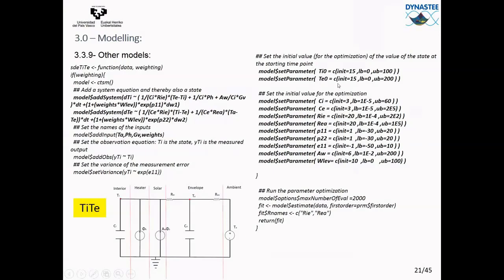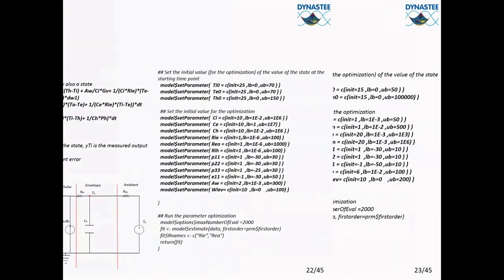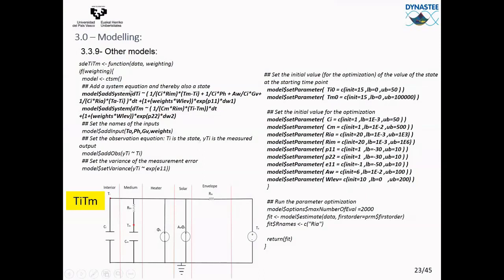Adding a third state variable Th to get model Ti-Te-Th, we create three system equations — each relating the state to the other relevant parts of the model. The inputs, observation equation, and measurement error variance remain the same, but we add the parameter Th_0 (initial heater temperature) and its associated parameters with limits. Alternatively, replacing Te with TM gives model Ti-TM, where the interior is related to the medium temperature, and the medium temperature is related to the other parts. Again the same inputs, observation equation, and measurement error, with TM_0 added to the parameter set.